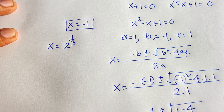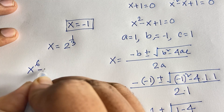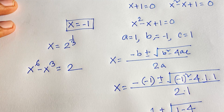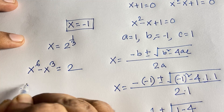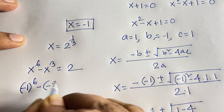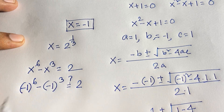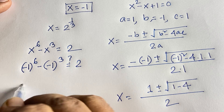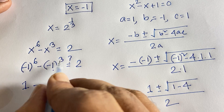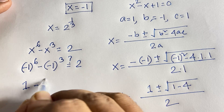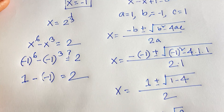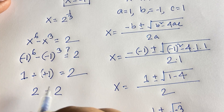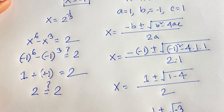Let's verify. Our equation is x to the power 6 minus x to the power 3 equals 2. First, testing x equals minus 1: (minus 1) to the power 6 minus (minus 1) to the power 3 equals 2. Since 6 is even, (minus 1) to the power 6 equals 1, and since 3 is odd, (minus 1) to the power 3 equals minus 1. So 1 minus (minus 1) equals 1 plus 1 equals 2. Confirmed: x equals minus 1 is correct.